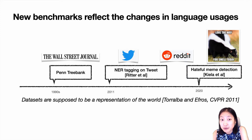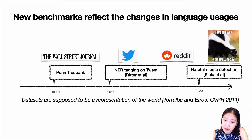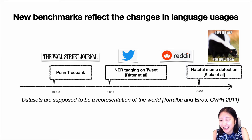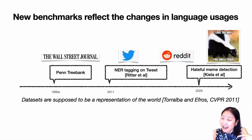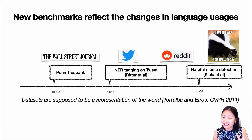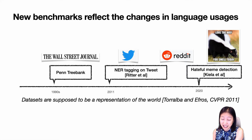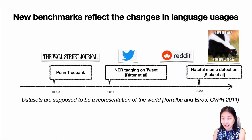Benchmarks are evolving as well to reflect changes in language usage. In the 1990s, we built Penn Treebank based on the Wall Street Journal. But as more people use Twitter, in 2011 people built NER tagging datasets on tweets. There are more and more datasets using language from Reddit and new forms of language like memes. We are trying to build datasets as representations of the world — this idea, originally describing computer vision datasets, applies to NLP as well.